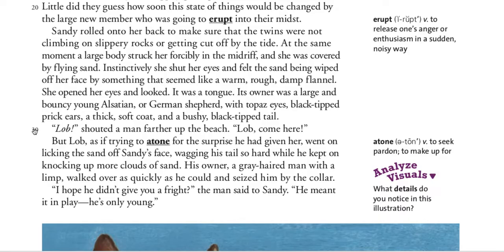'Lob!' shouted a man farther up the beach. 'Lob, come here!' But Lob, as if trying to atone for the surprise he had given her, went on licking the sand off Sandy's face, wagging his tail so hard that he kept knocking up more clouds of sand. His owner, a gray-haired man with a limp, walked over as quickly as he could and seized him by the collar.